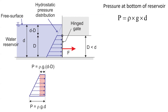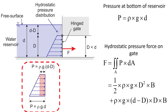As sketched, this trapezoidal pressure distribution can be considered as a superposition of a rectangular pressure distribution (dashed in red) plus a triangular pressure distribution. The total pressure force acting on the gate equals the sum of the triangular contribution — half of rho g D squared times B — plus the rectangular contribution — rho g times (d minus D) times D times B.